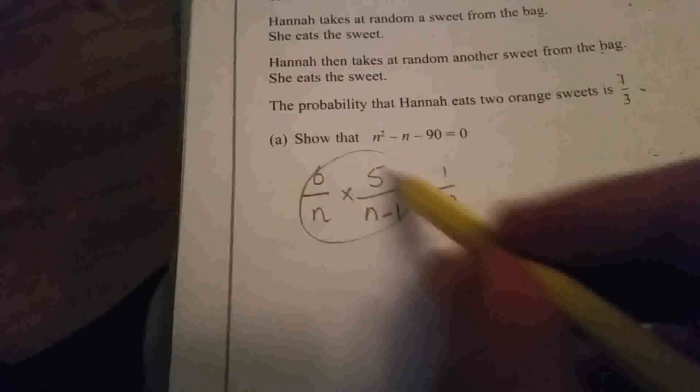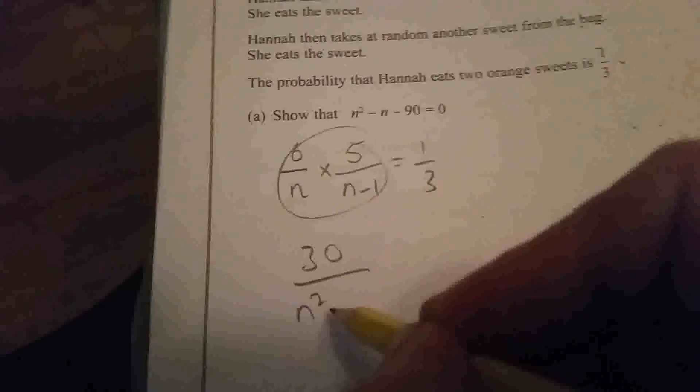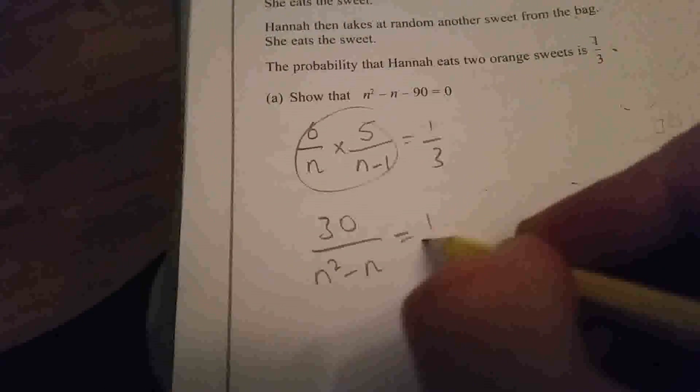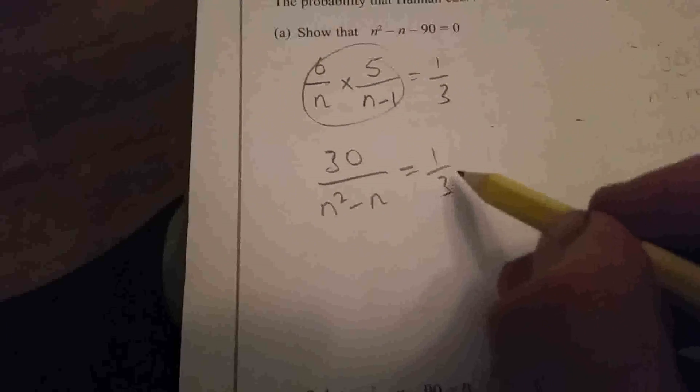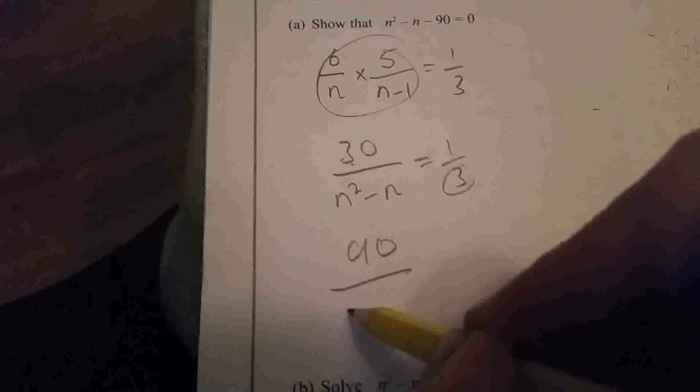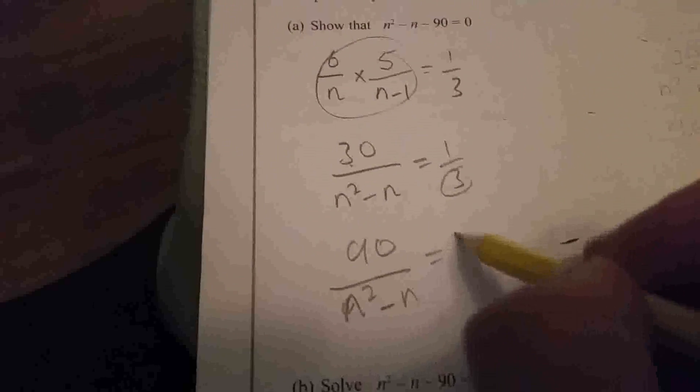So let's just simplify this part. You get 30/(n² - n) = 1/3. And then if you multiply that together, you get 90/(n² - n) = 1.